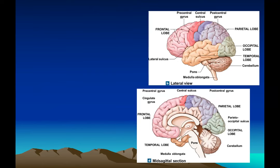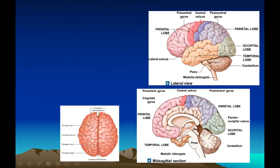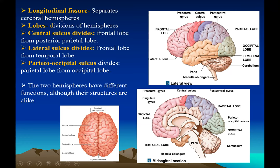There is a deep fissure called the longitudinal fissure that divides the left hemisphere from the right hemisphere. The different lobes of the cerebrum are named after the bone they are found under. The frontal lobe is under the frontal bone. We also have the occipital lobe, temporal lobe, and parietal lobe. The central sulcus divides the frontal and parietal lobes; the lateral sulcus divides the frontal and temporal lobes; and the parieto-occipital sulcus divides the parietal from the occipital lobe.